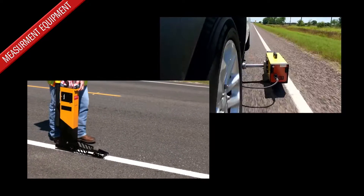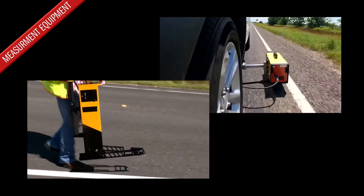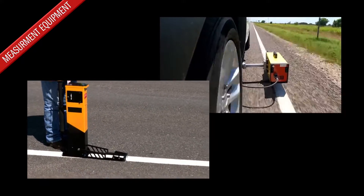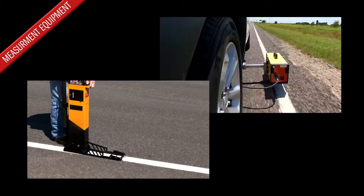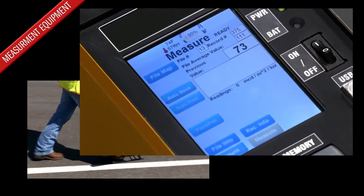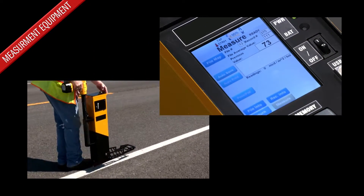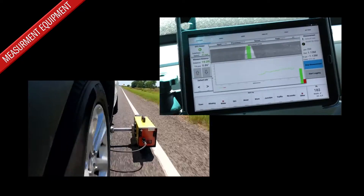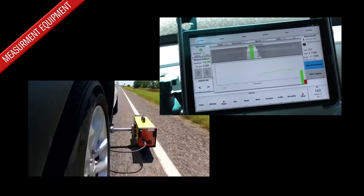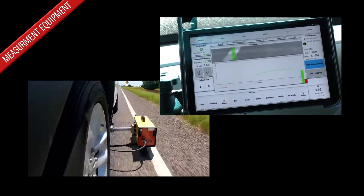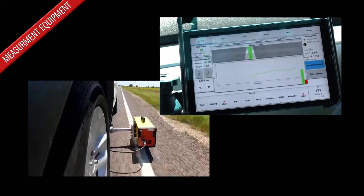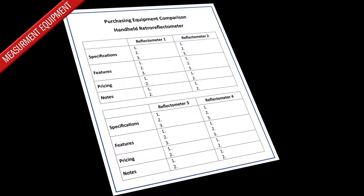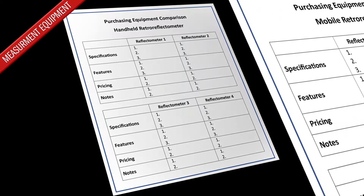Pavement marking retro-reflectivity can be measured during the day or at night using an instrument called a retro-reflectometer. Handheld instruments measure pavement marking retro-reflectivity in spot locations, while vehicle-mounted instruments are used to collect continuous data at highway speeds. Purchasing equipment may be practical if you have a significant amount of pavement marking mileage to measure.